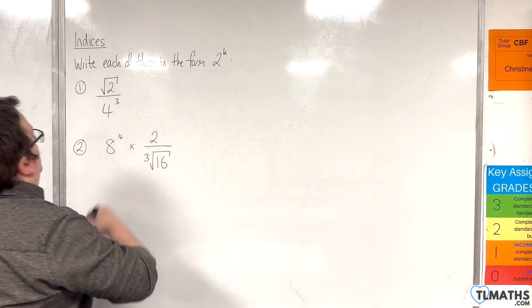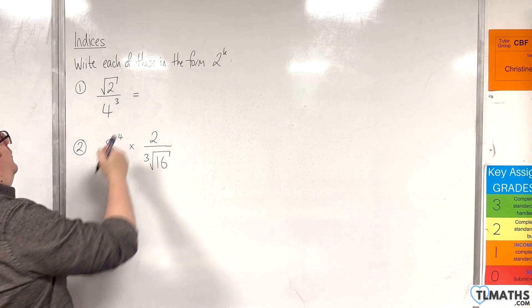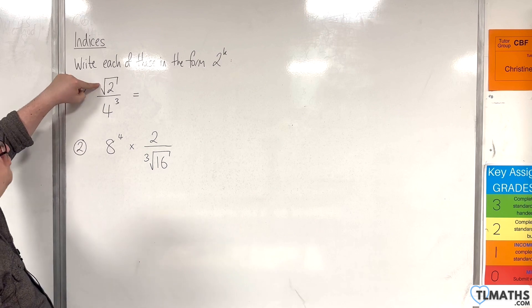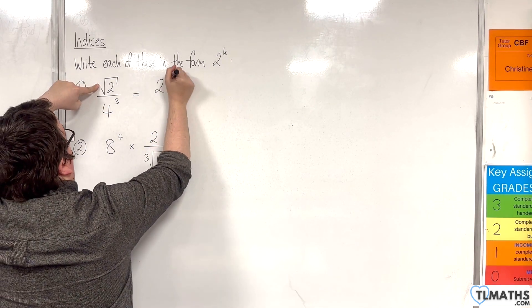So what you want to do with question number 1 is to look at what you have, and you've got the root 2, so you can write that as 2 to the power of 1 half.